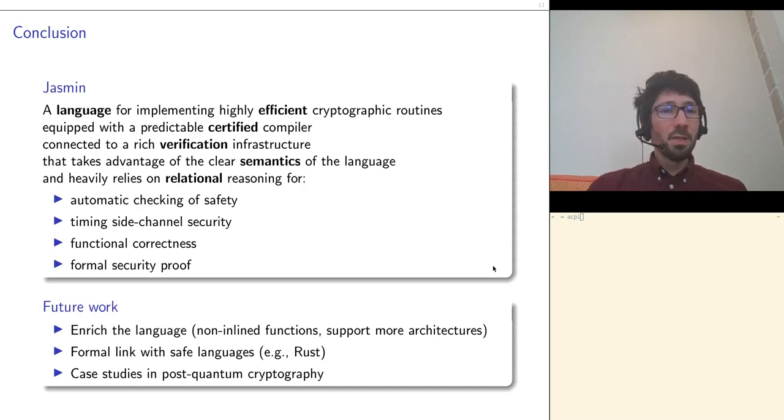This brings me to the end of my talk. I've shown you Jasmin, a language for implementing highly efficient cryptographic routines that comes with a certified compiler and a verification infrastructure that can be used to prove safety, side-channel security, functional correctness, or even cryptographic security. There is ongoing and future work to enrich the language, for instance with non-inline functions, to be able to write larger pieces of code. We are also studying the connection with other safe languages like Rust, and there are more case studies to be done, in particular, in post-quantum cryptography. Thank you very much for your attention.